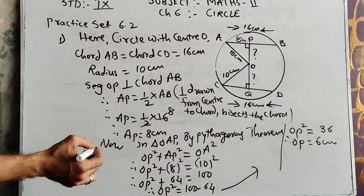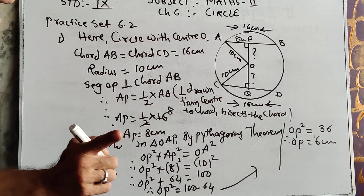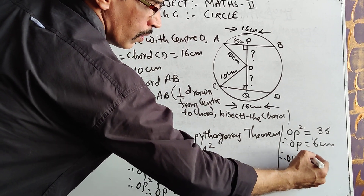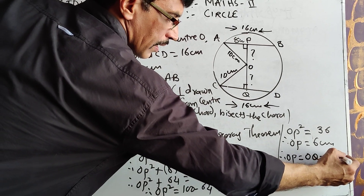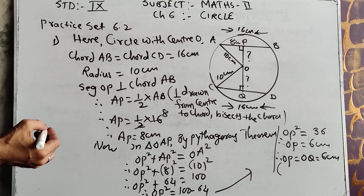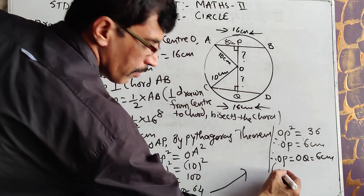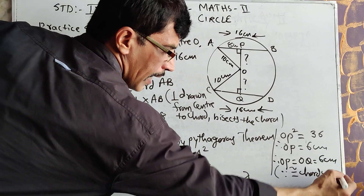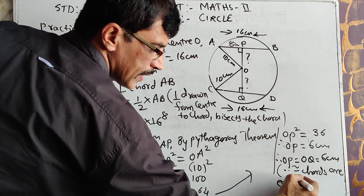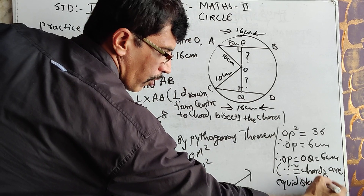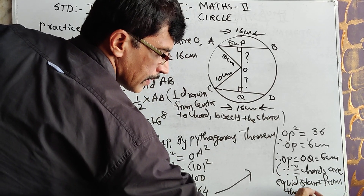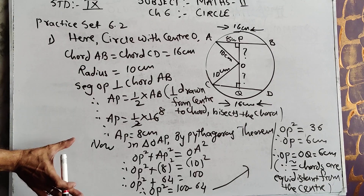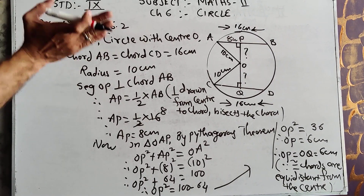Now if OP is 6, that means OQ is also 6. Therefore OP = OQ = 6 centimeters. The reason you have to write is: because congruent chords are equidistant from the center. The answer is OP = OQ = 6. Very easily we are getting the answer — it is related to the previous exercise only, using Pythagoras.